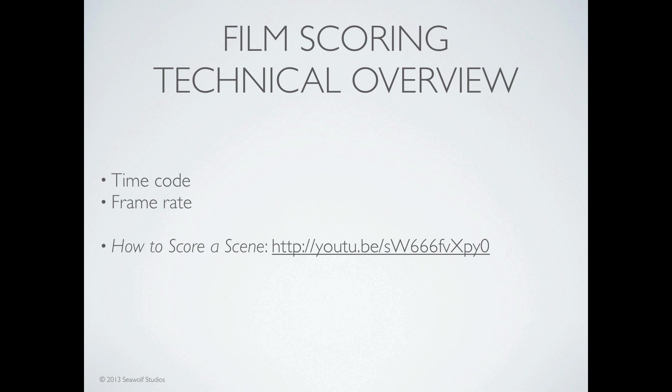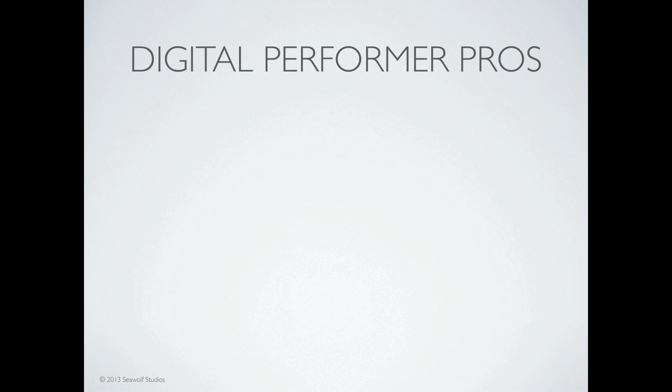The last webinar we did is called 'How to Score a Scene' — I'll annotate the YouTube link in the video archive so you can click on it. In that webinar we discussed different types of film music, functions of film music, and spotting, and more about how you write music for picture. Today we're really just going to be looking at technical aspects inside Digital Performer and Logic.